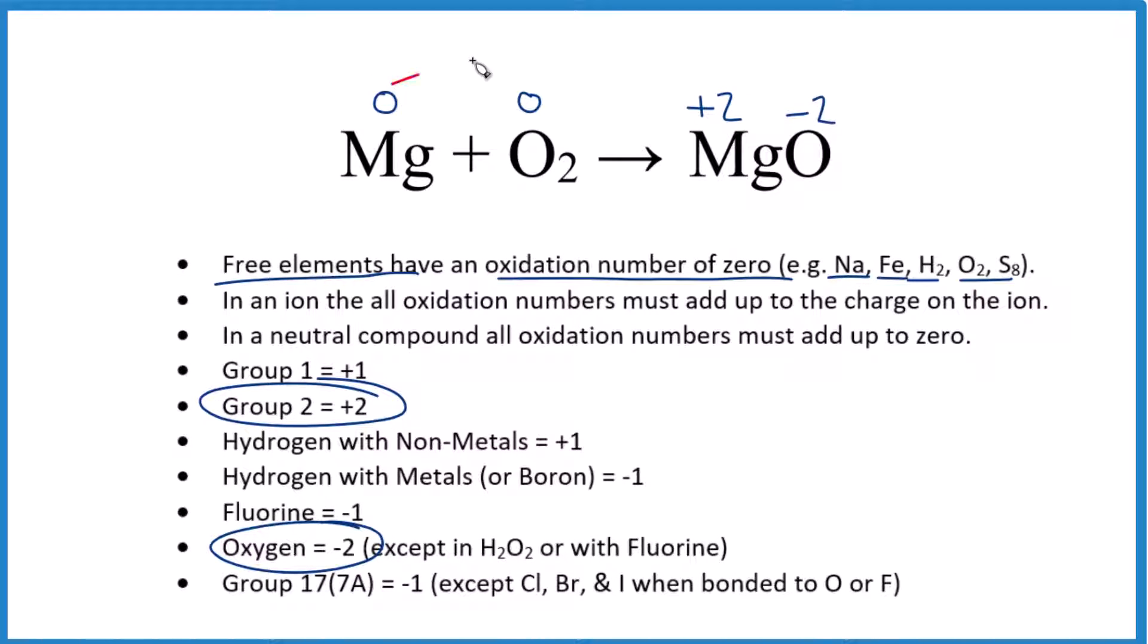Now we see magnesium went from zero to plus two, oxygen went from zero to negative two. This number got smaller, the oxidation number got smaller, that's going to be reduction because it got reduced.